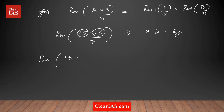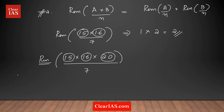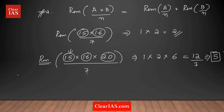With more than two numbers, say 15 × 16 × 20 divided by 7: divide each by 7 individually — remainders are 1, 2, and 6 (since 14 is the closest multiple of 7 below 20). Multiply the remainders: 1 × 2 × 6 = 12. Since 12 > 7, divide 12 by 7 again — the final remainder is 5. If the product exceeds the divisor, divide again.